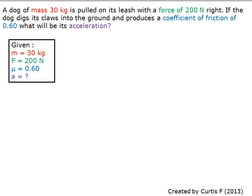A dog of mass 30 kilograms is pulled on its leash with a force of 200 newtons right. If the dog digs its claws into the ground and produces a coefficient of friction of 0.60, what will be its acceleration?